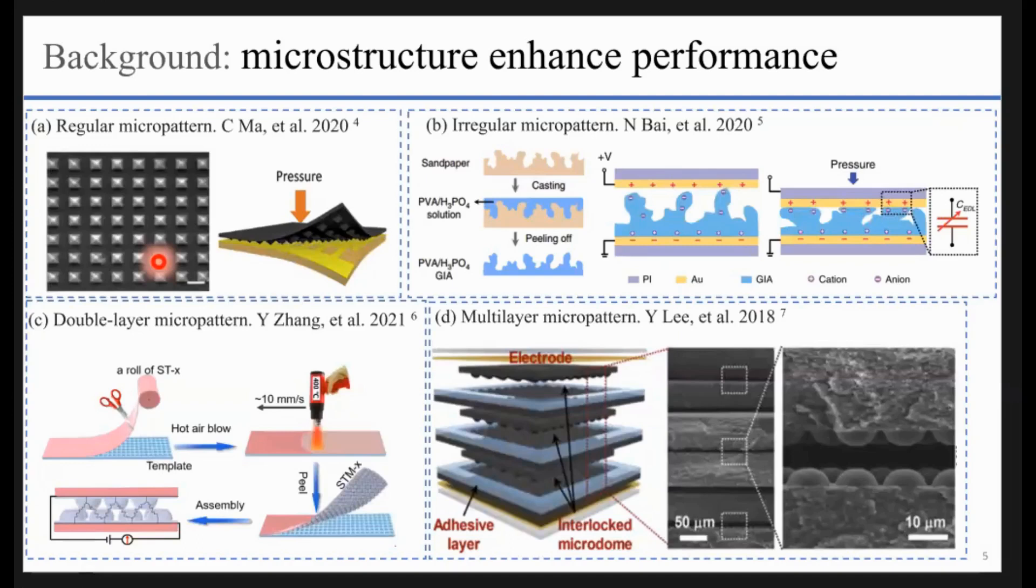But if we use microstructures, only the peaks of the structure will contact with the bottom surface. The contact area will be very small, which can make the local pressure very high. So even a small pressure applied on the sensor will cause obvious deformation of the microstructure, leading to obvious resistance variation.